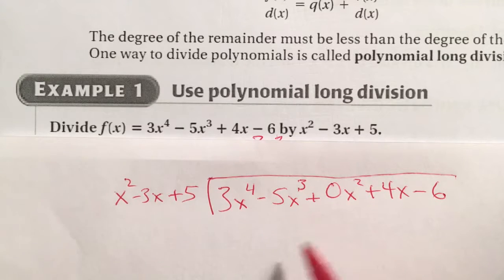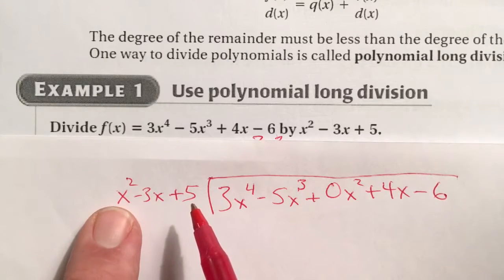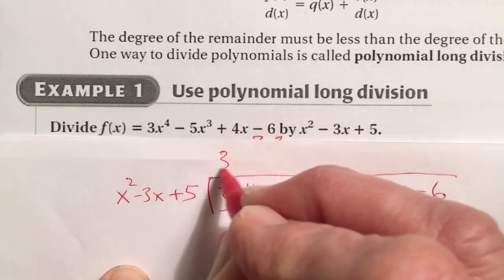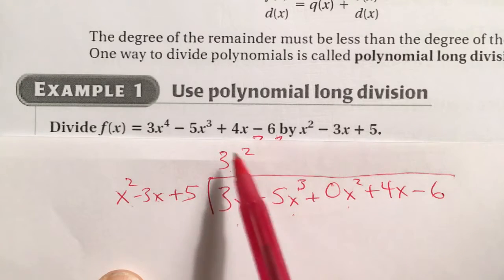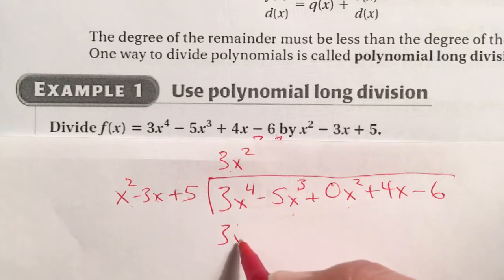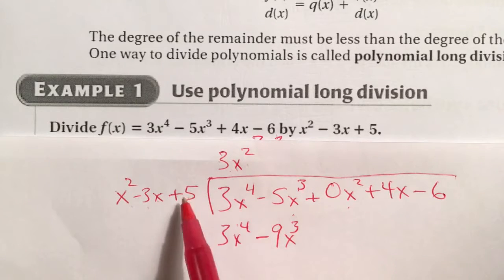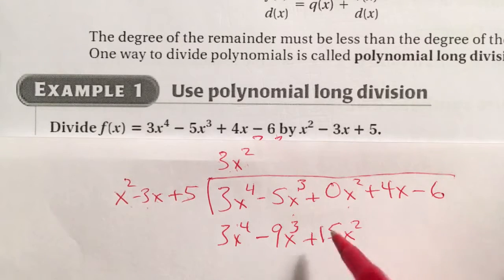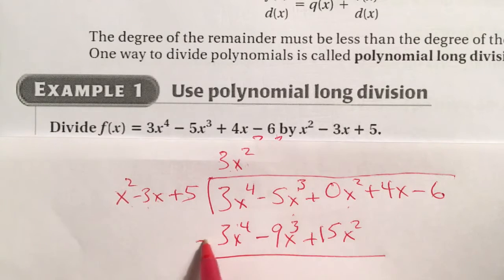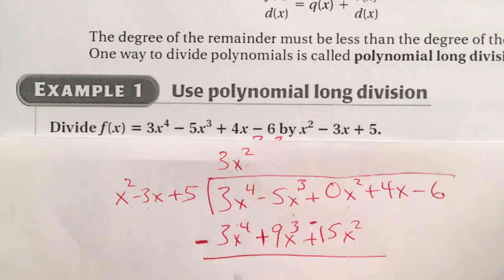The divisor is x^2 minus 3x plus 5. x^2 and 3x to the fourth, we want to get as close to that as possible. We can get right to it by multiplying the x^2 by 3x^2. So we'll put that here. We'll multiply each of these terms by the 3x^2 and put them in the appropriate column. 3x^2 times x^2 is 3x to the fourth. 3x^2 times negative 3x is negative 9x^3. 3x^2 times plus 5 is 15x^2. You can see how that lines up perfectly with the x^2. Then you're going to subtract. You subtract by changing all of the signs. So subtract, plus, and minus. Don't forget what you do to each of those.